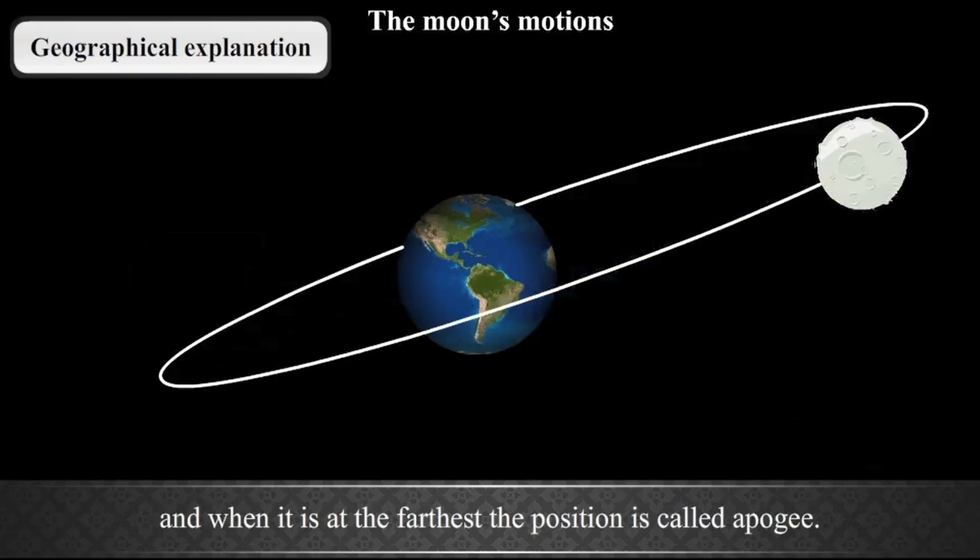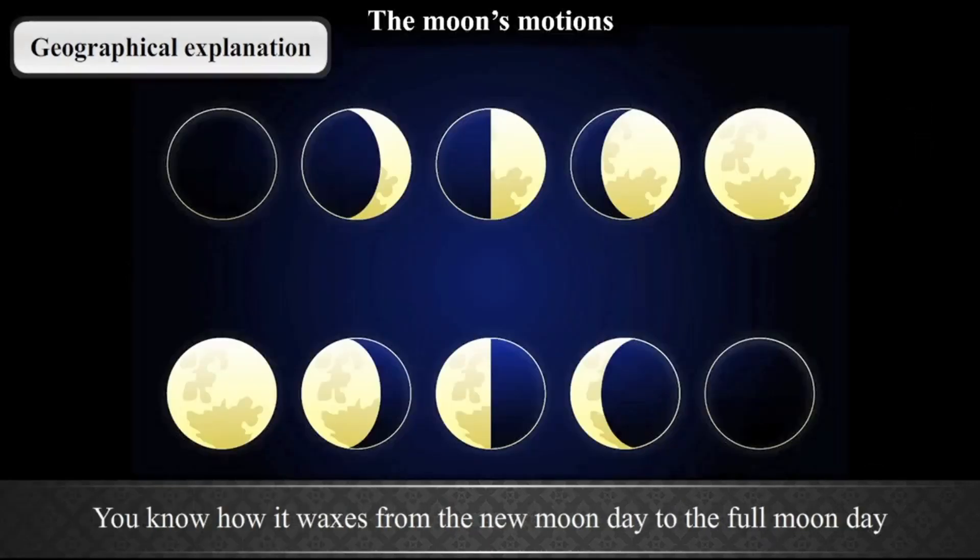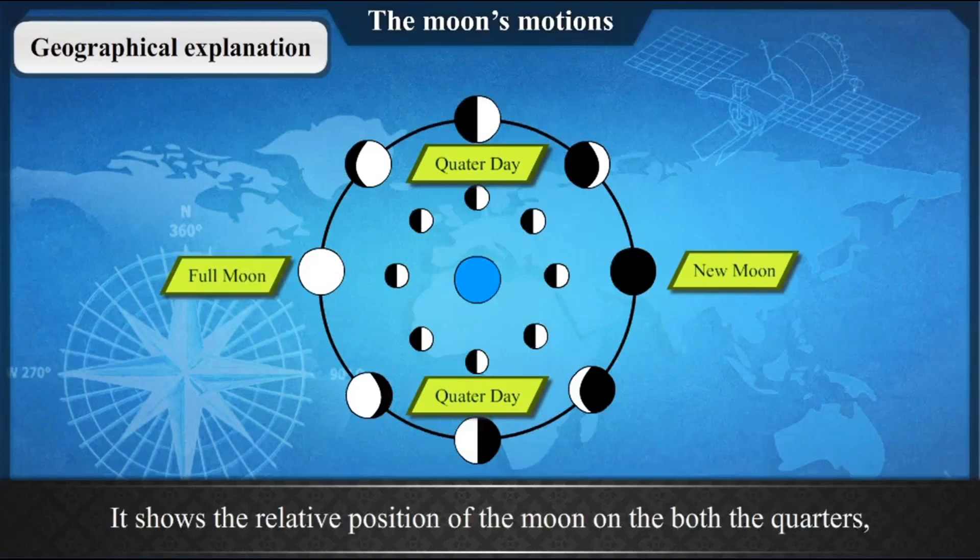You have studied the phases of the Moon. You know how it waxes from the new moon day to the full moon day, and how it vanes from the full moon to the new moon day. See figure which shows the different phases of the Moon. It shows the relative position of the Moon on both the quarters, the full moon and the new moon days with respect to the Earth and the Sun. Figure shows the positions of the Moon as seen from the space and as seen from the Earth. How will you identify which are which?